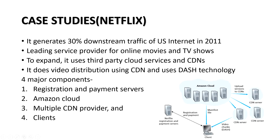As per the report for 2011, Netflix generates 30% downstream traffic in US internet. It is a leading service provider for online movies and TV shows. To expand, it uses third-party services. Akamai CDN is used for Netflix along with third-party cloud services and CDNs. It does video distribution using CDN and uses DASH technology for streaming.